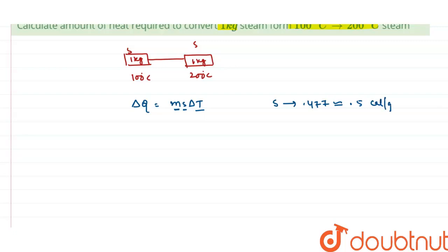Okay, now putting the value. Delta q equals to mass of steam, that is 1 kilogram, and in gram I can write 1000 gram, into value of s that is 0.5, and temperature difference that is t2 minus t1, 200 minus 100, it is 100.